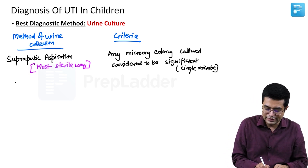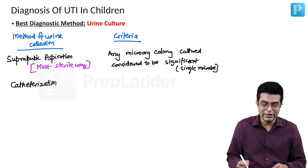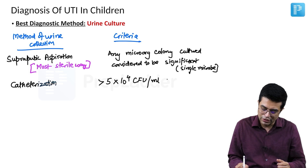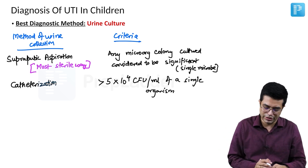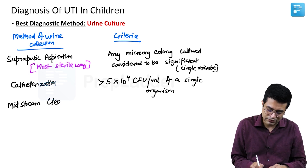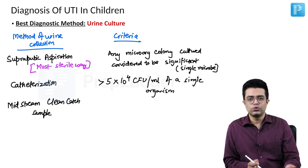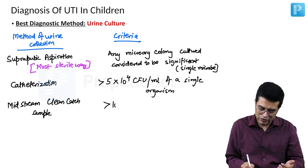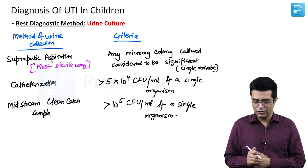The second method is catheterization — inserting a Foley's catheter and taking a sample. Here there is a chance of contamination, so the criteria is more than 5 × 10⁴ colony forming units per mL of a single organism. The third method is midstream clean catch sample, where you discard the first few drops, retract the prepuce in male children, collect in a sterile container, and send for culture immediately. For this method, more than 10⁵ colony forming units per mL of a single organism is considered a significant positive culture indicating UTI.